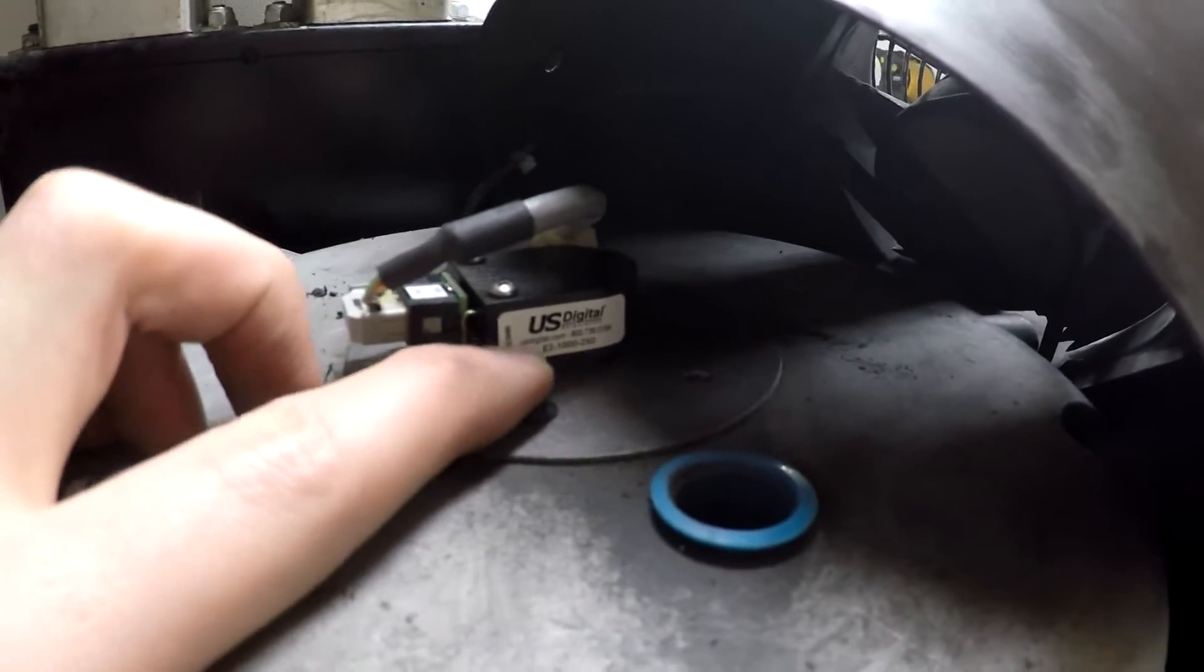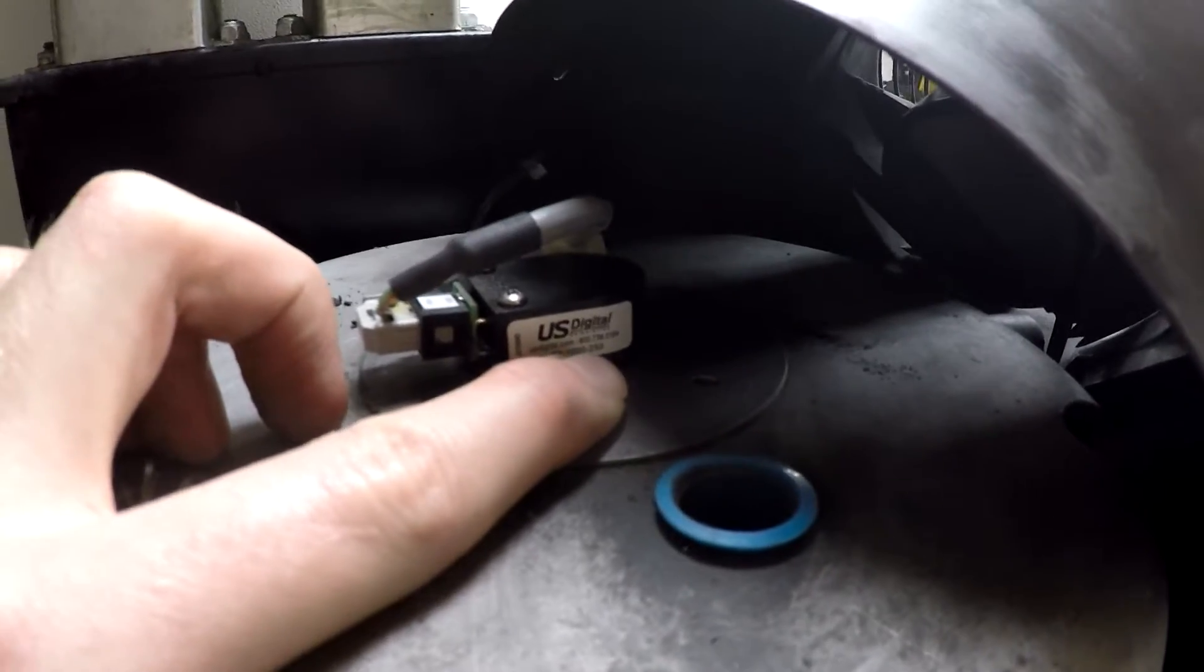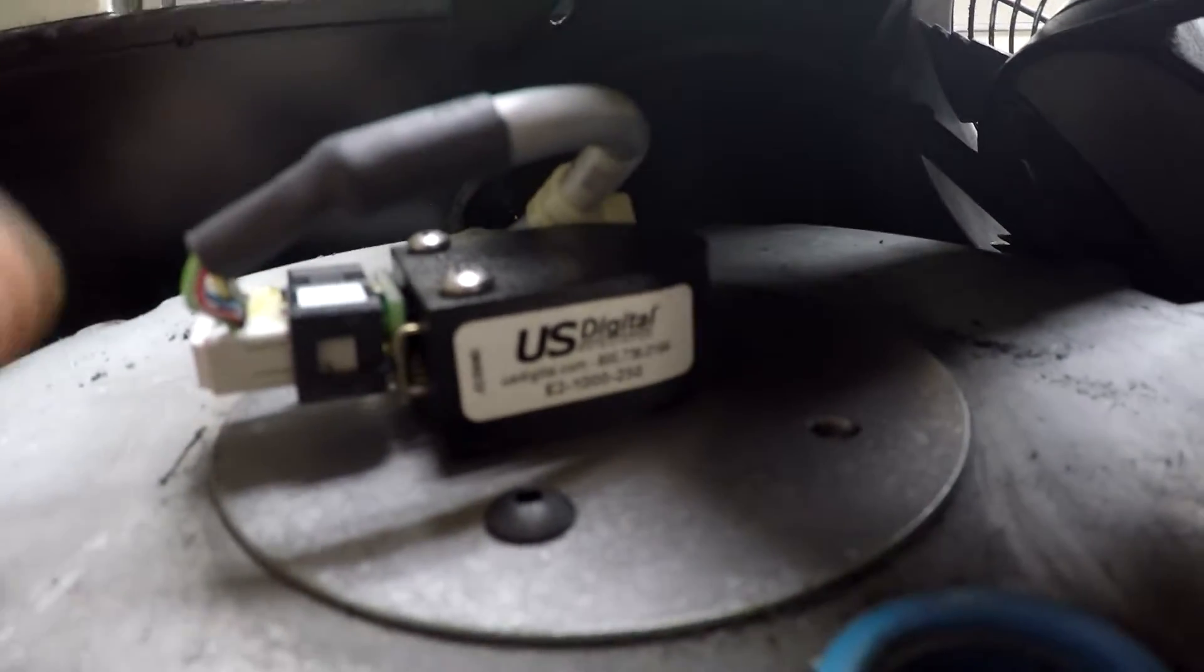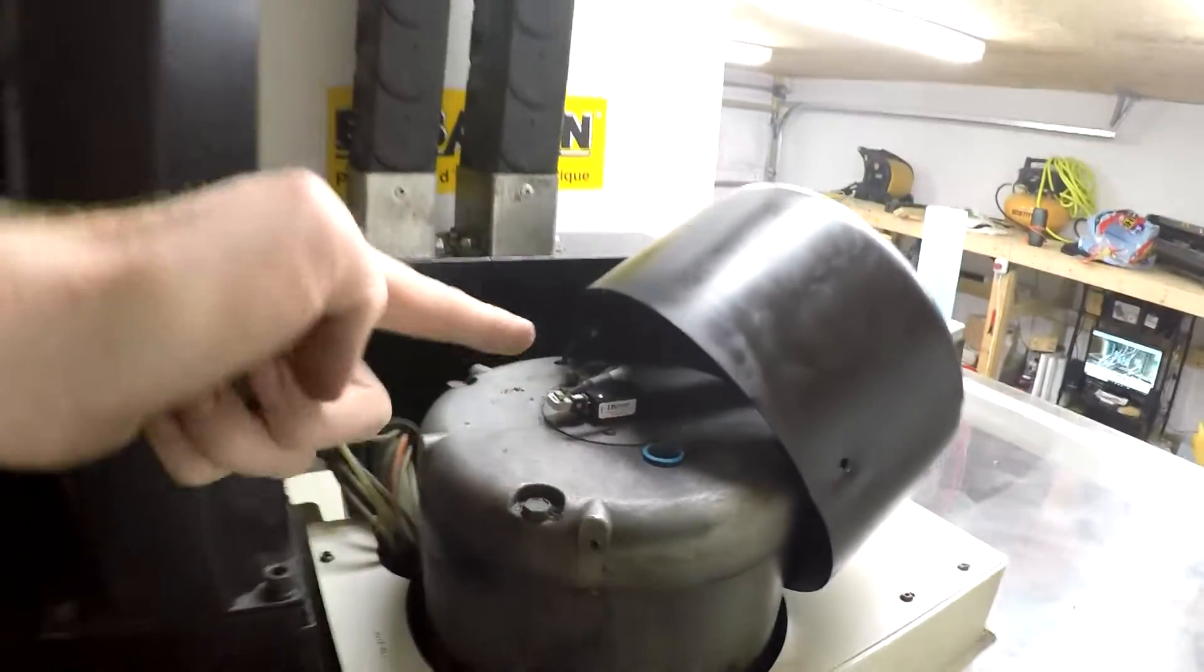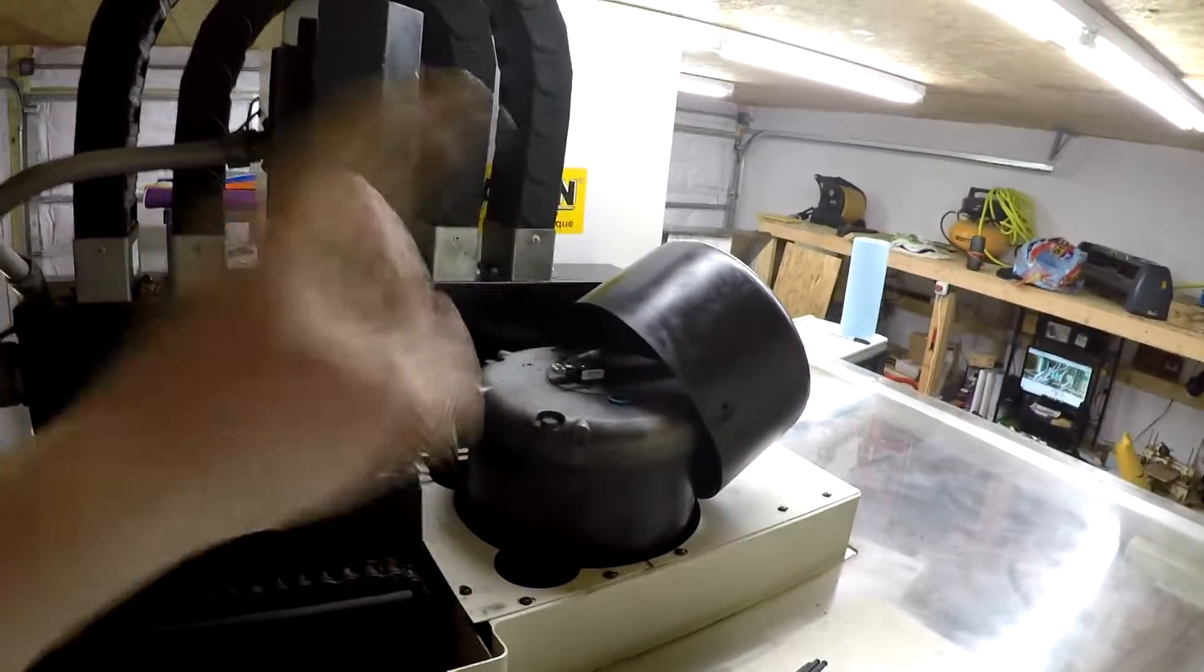And I actually looked up this number, E2-1250. I don't know if you can see it. If I look that up by US Digital, that's an encoder. So that's another thing you can look at.